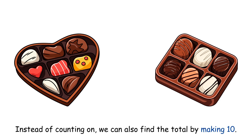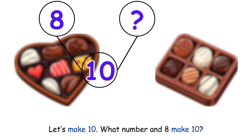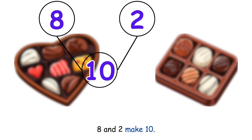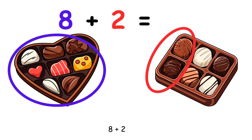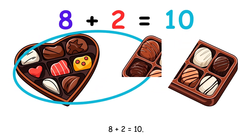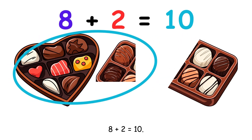Instead of counting on, we can also find the total by making ten. Let's make ten. What number and eight make ten? Eight and two make ten. Eight plus two equals ten.